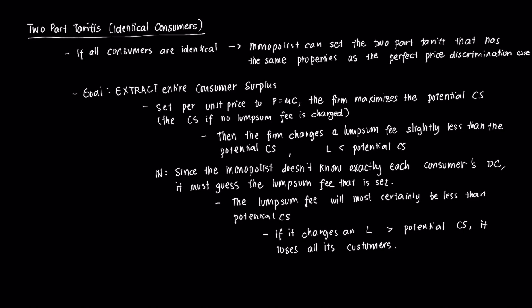This is the very first case we'll discuss — where all consumers are identical. Of course, it's not a very realistic assumption, but it can potentially apply in a very specialized market where consumers largely behave similarly and this strategy is applicable for the monopolist. The premise is that under a two-part tariff pricing system, the monopolist can set the tariff in a manner that has the same properties as perfect price discrimination — that is, it is able to extract all of the consumer surplus.